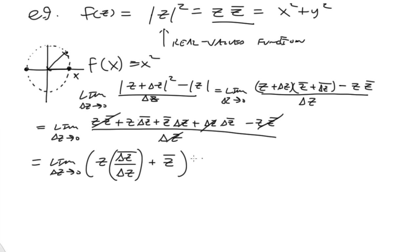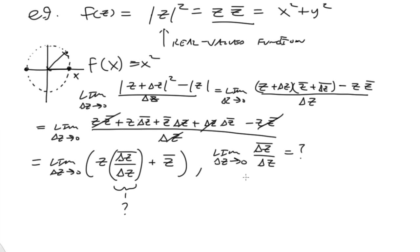This is getting pretty interesting. Now we really have to study what's going on. We need to study the limit as delta z goes to zero of delta z-bar over delta z, and see what that equals. This seems like a fairly straightforward function, but let's test paths. Like any limit in the complex plane, it has to be true for all paths. Let's get some intuition by looking at two different paths.